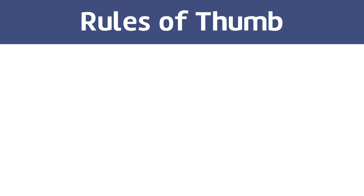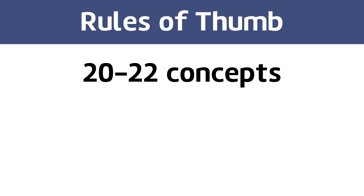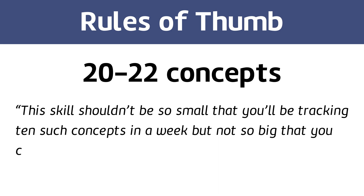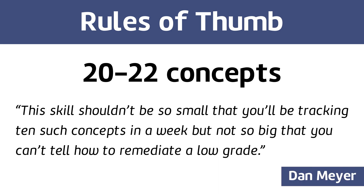With this in mind, what are some rules of thumb for how many and which concepts to include in our checklist? First, I found that 20 to 22 concepts tend to be ideal. This allows us to devote plenty of time to each concept, and it usually breaks down nicely to fit within our 6 or 9-week grading periods. Dan Meyer has a helpful quote: this skill shouldn't be so small that you'll be tracking 10 such concepts in a week, but not so big that you can't tell how to remediate a low grade.